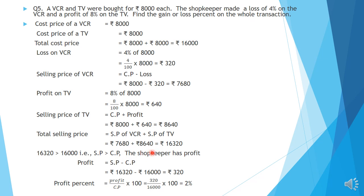So the shopkeeper has profit in the transaction. Profit equals SP minus CP: Rs. 16,320 minus Rs. 16,000 equals Rs. 320. Profit percent equals profit divided by CP into 100: 320 divided by 16,000 into 100. Simplifying by cancelling zeros gives 320 by 160, then 32 by 16, which gives 2. So the profit percentage is 2 percent.